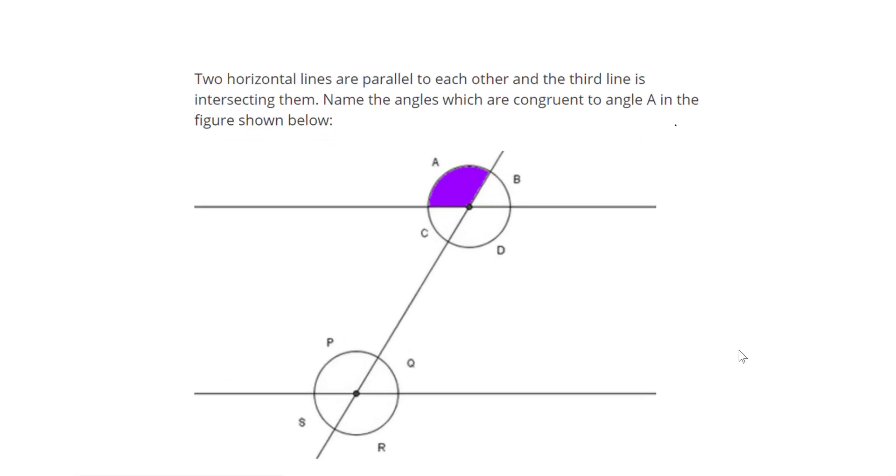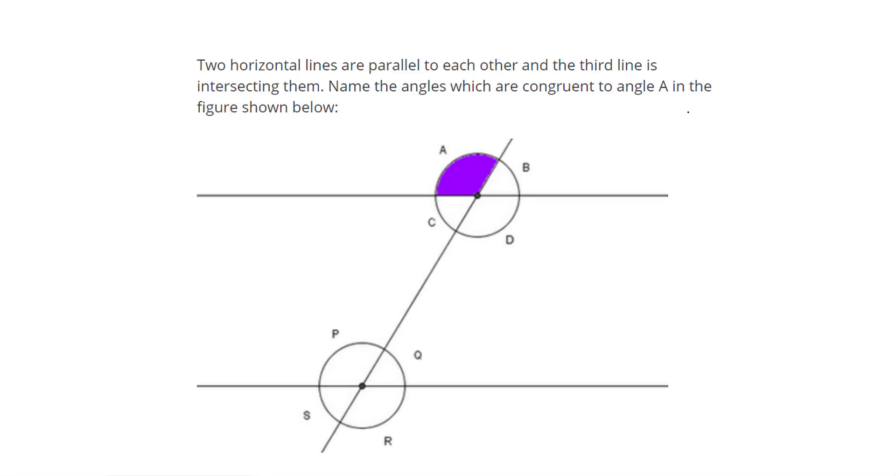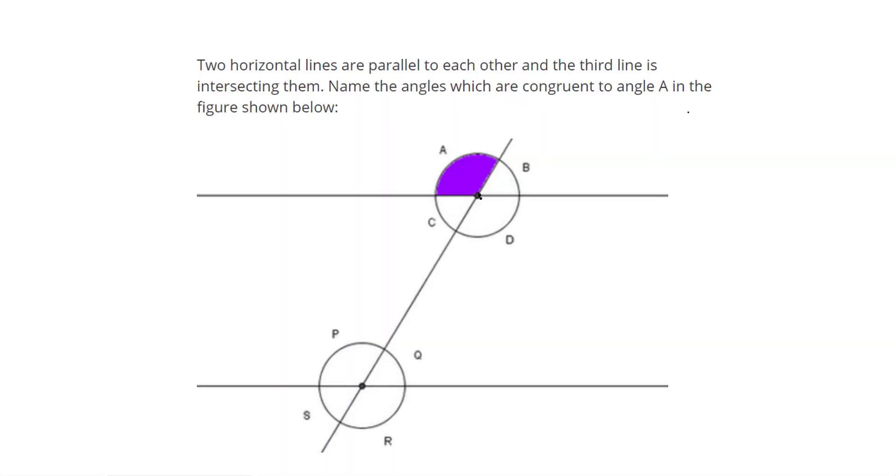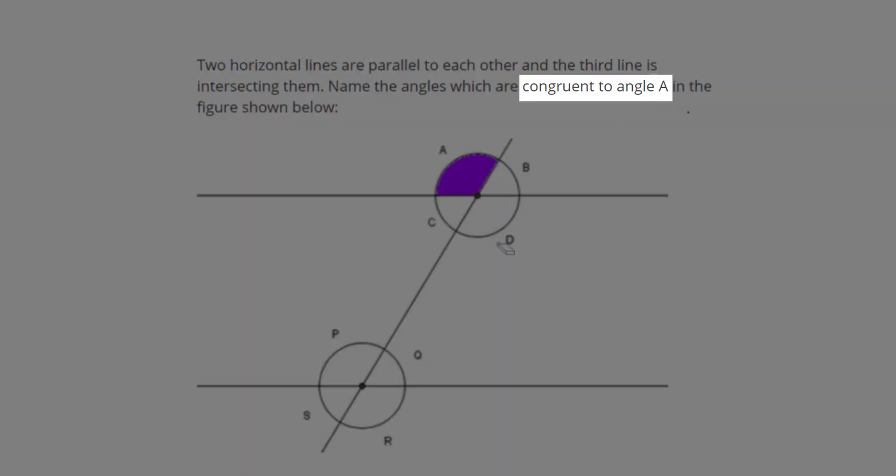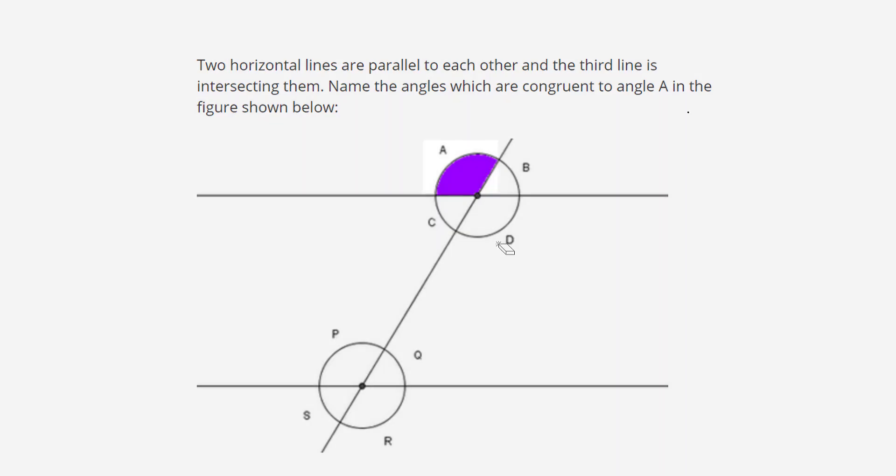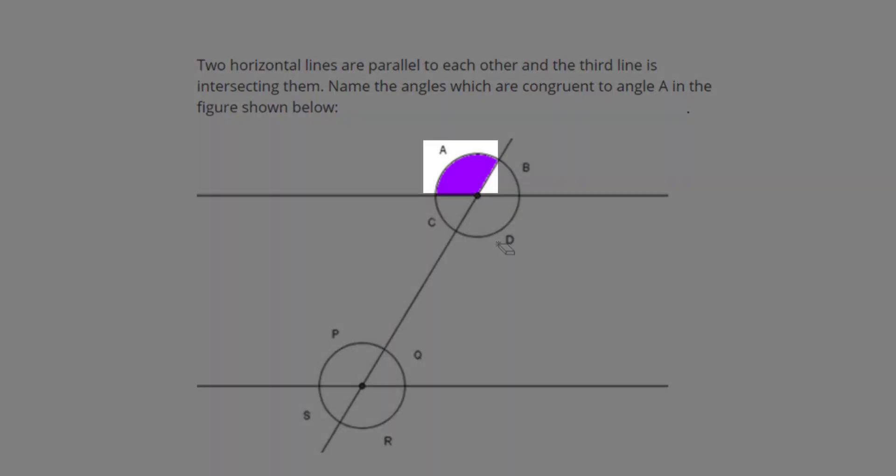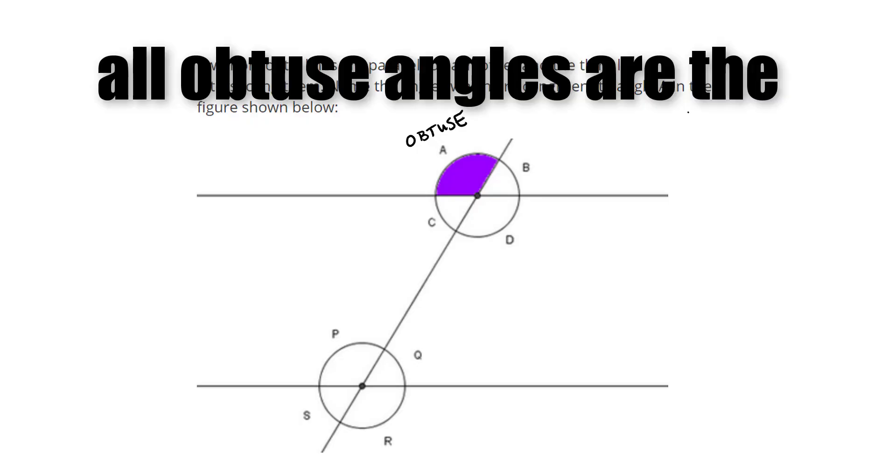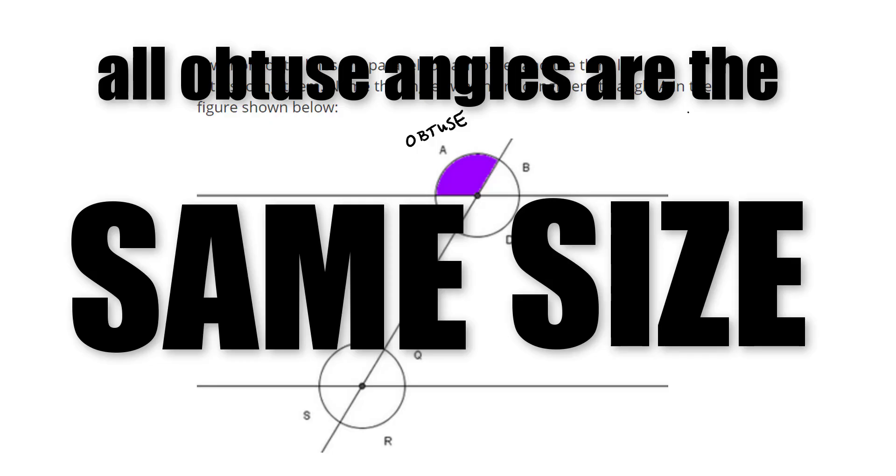We're going to take notes on what we do right here. We've got two horizontal parallel lines, and what you notice, I love this, because they've drawn the circle for me. You can see that that circle is going around our intersection, which is this point here and here, and what we have is we have angle A shaded in, and they want you to name the angles that are congruent or equal to angle A. What I teach you guys is angle A right there by itself is an obtuse angle. All of the obtuse angles that are created in these two circles are the same size. I'm going to say that again, the same size. All obtuse angles are the same size.